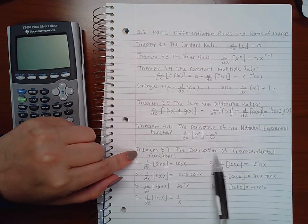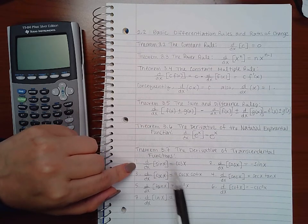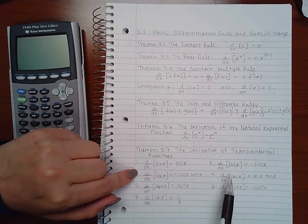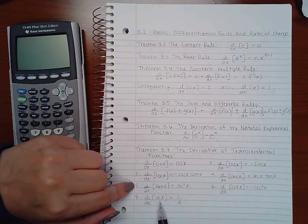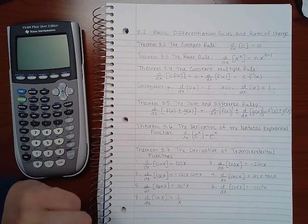So theorem 3.7 is the derivative of transcendental functions. That's your sine, cosine, cosecant, secant, tangent, cotangent, and then your natural log of x.